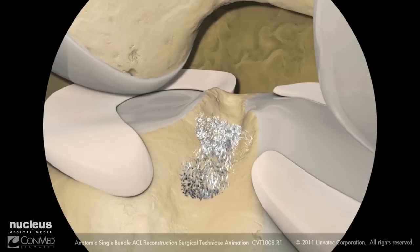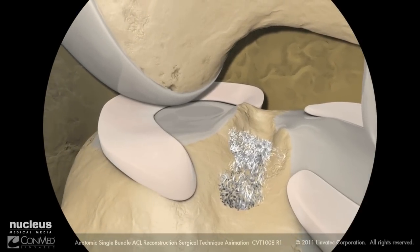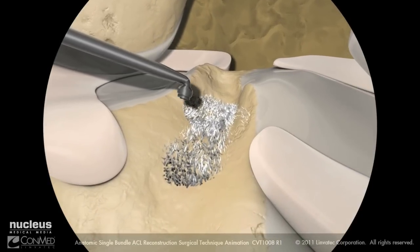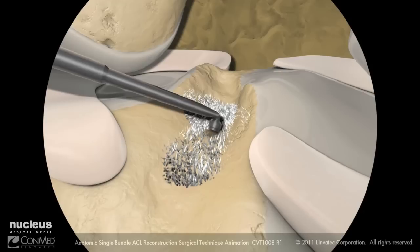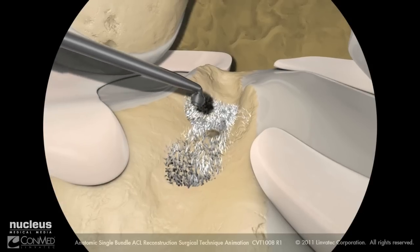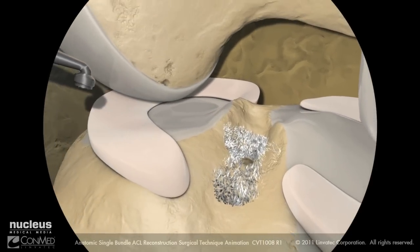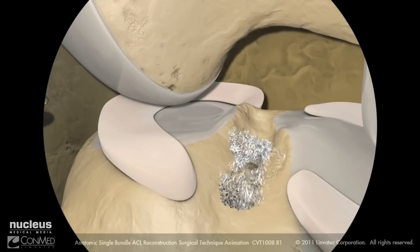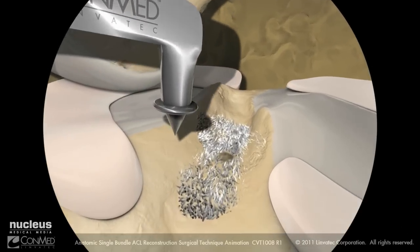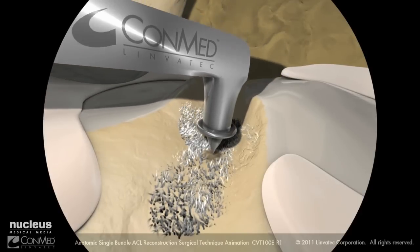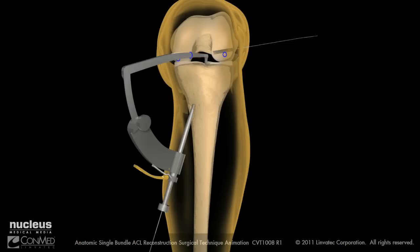Switch the arthroscope to the anterolateral portal. Next, insert the light wave ablader into the anteromedial portal to mark the center of the tibial ACL footprint. Set the angle of the pin ACL guide to 55 degrees. Insert the tip into the anteromedial portal, placing the tip of the guide into the center of the tibial ACL footprint. Next, advance the external guide sleeve flushed to the anterior tibial cortex.